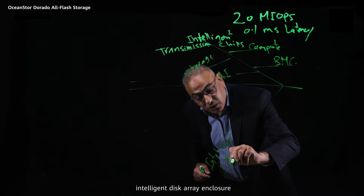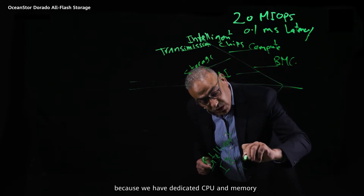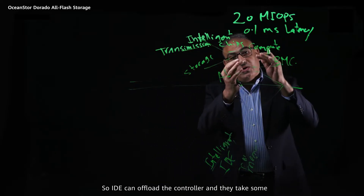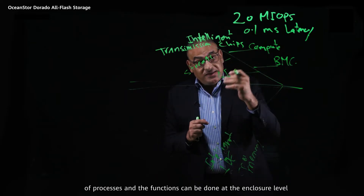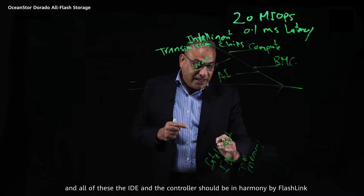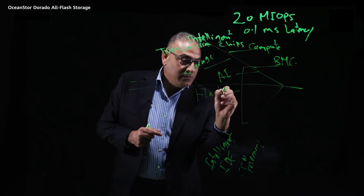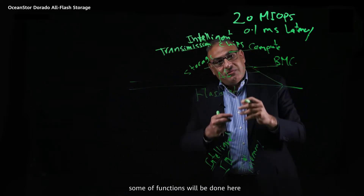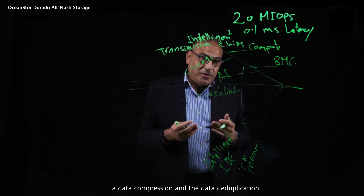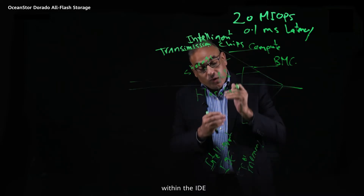The second dimension is the intelligent disk array. It is intelligent because it has a dedicated CPU and memory, so the IDE can offload the controller — some processes and functions that would otherwise be done at the controller level. The IDE and the controller work in harmony via Flashlink. Because it's a distributed architecture, some functions will be done at the controller level, while data compression, data deduplication, and data reconstruction will be done inline within the IDE.